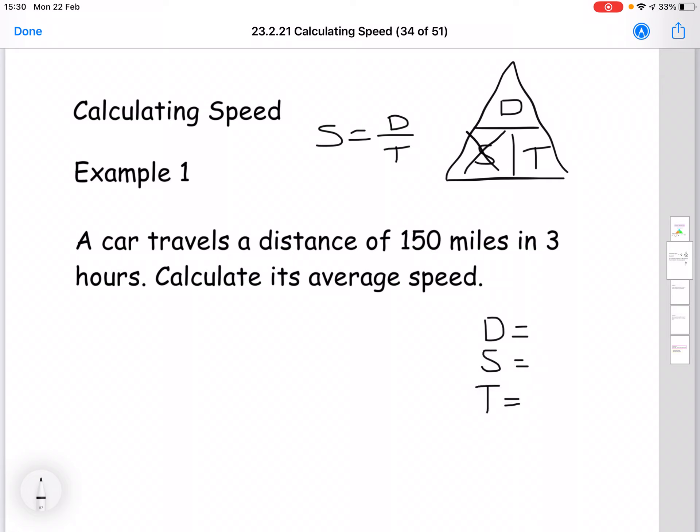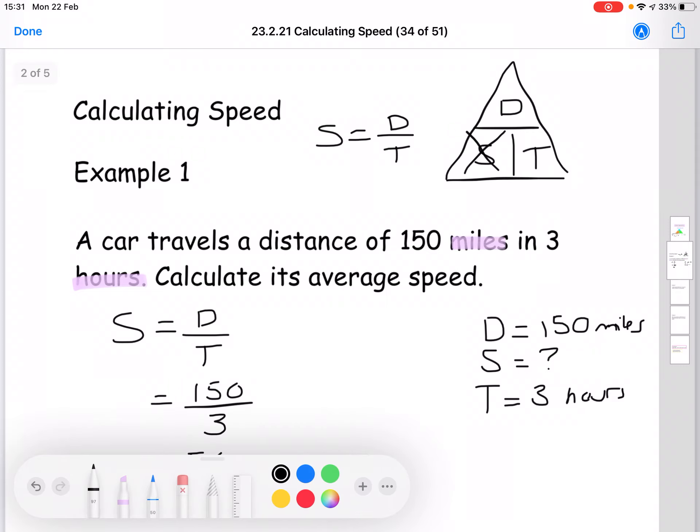So your distance in this question is 150 miles. Our speed, we don't know. That's what we're trying to find out, so we'll just give that a question mark. And then our time is three hours. So when we go to fill in our formula, speed equals distance divided by time. So that would be 150 divided by three, which is 50. And then your units will come from your distance and your time. So because our distance was miles and our time was hours, it'll be miles per hour.